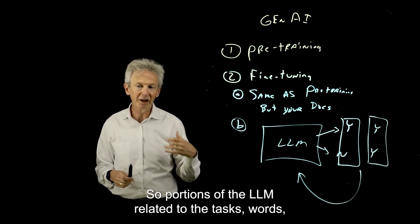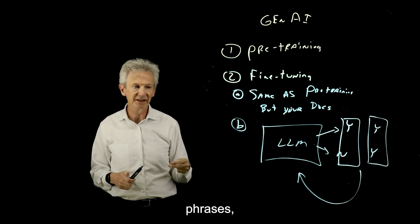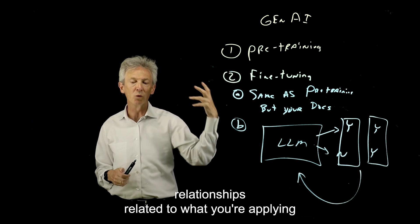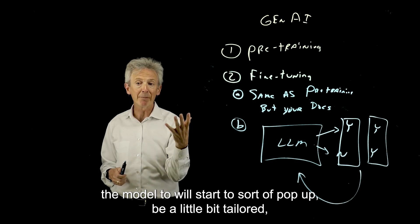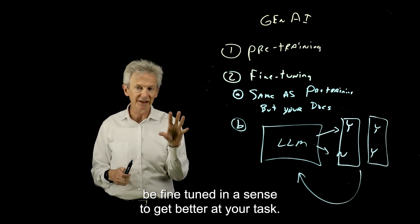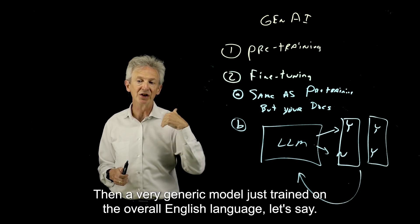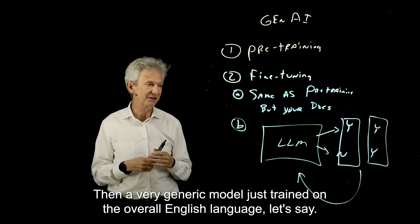So portions of the LLM related to the task—words, phrases, relationships, related to what you're applying the model to—will start to sort of pop up, be a little bit tailored, be fine-tuned in a sense to get better at your task than a very generic model just trained on the overall English language.